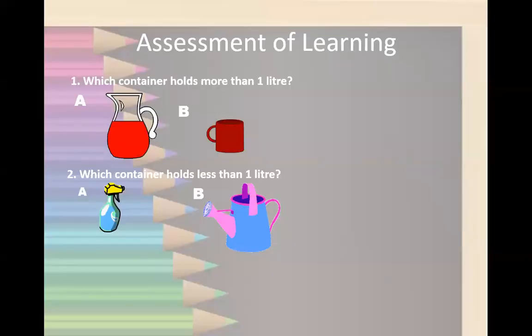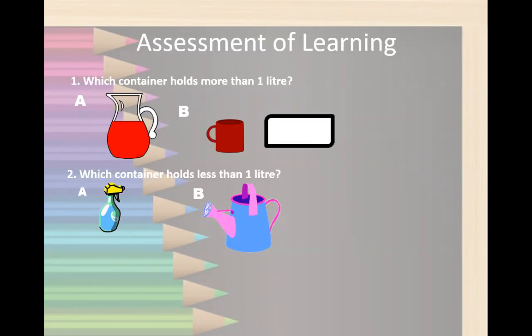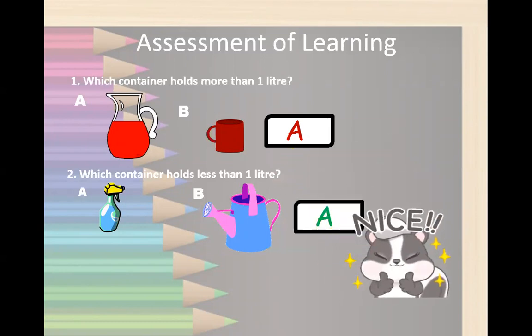Assessment of learning. Number one: which container holds more than one liter — A or B? It's A. Number two: which container holds less than one liter — A or B? Yes, A. Very good.